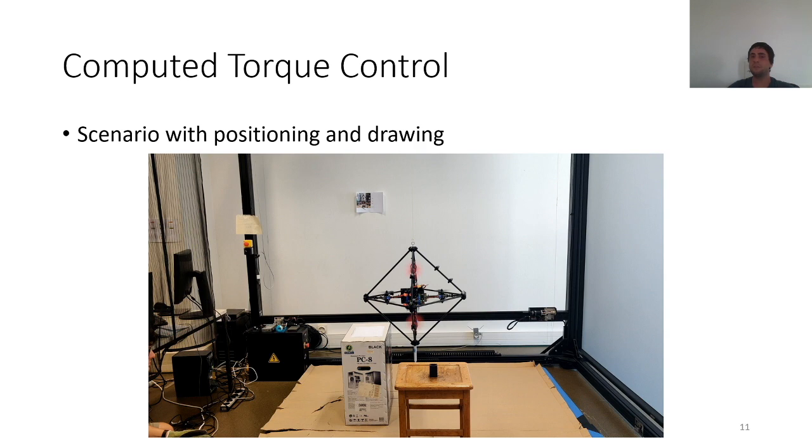I'm presenting you now some experimental results we had with the computed torque controller. These experiments were done with a new prototype built during my second year. The main difference between this one and the previous one is a pulley that we have added in order to have the spring horizontal so we can avoid the effects of the transverse vibration of the spring due to its own mass.